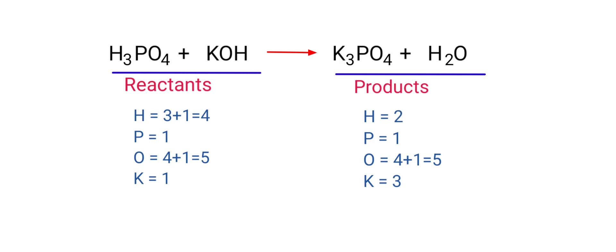In this equation, we need to balance the potassium atoms first. To do this, we need to put a coefficient of 3 in front of KOH. The potassium atoms are balanced.